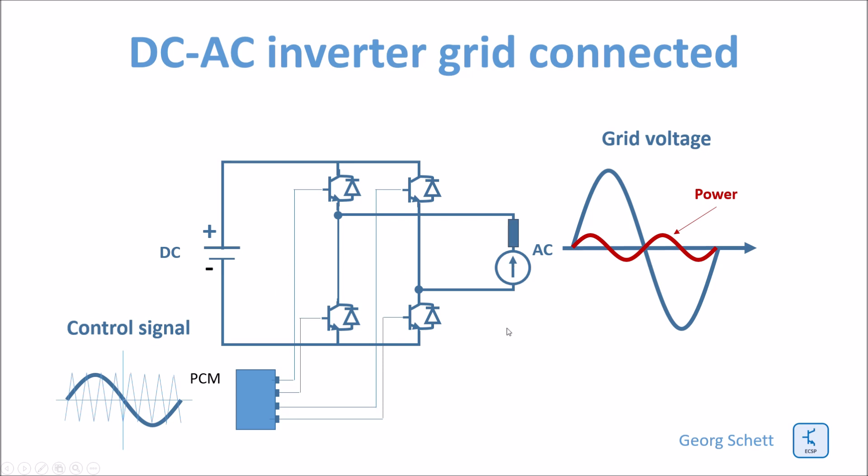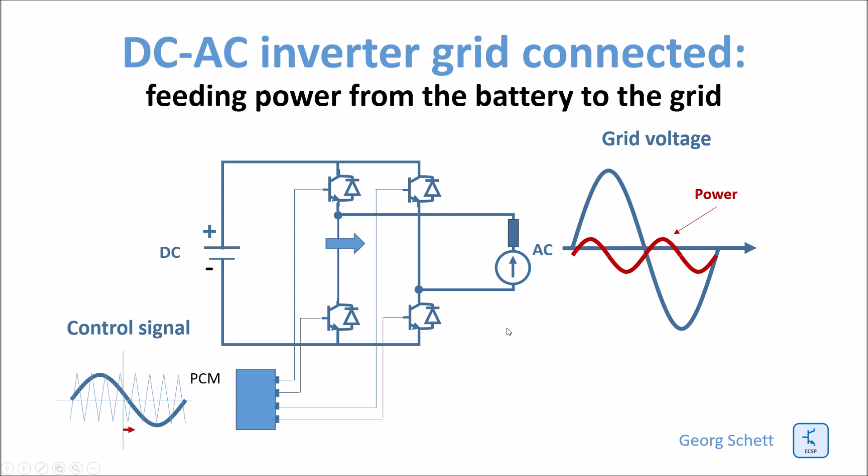Now I start to increase the phase shift so the control signal starts to lag the grid signal and you can see how the power starts to flow from the DC to the grid, to the AC. So the bigger the phase shift is, the more power flows from the DC battery to the grid and vice versa.